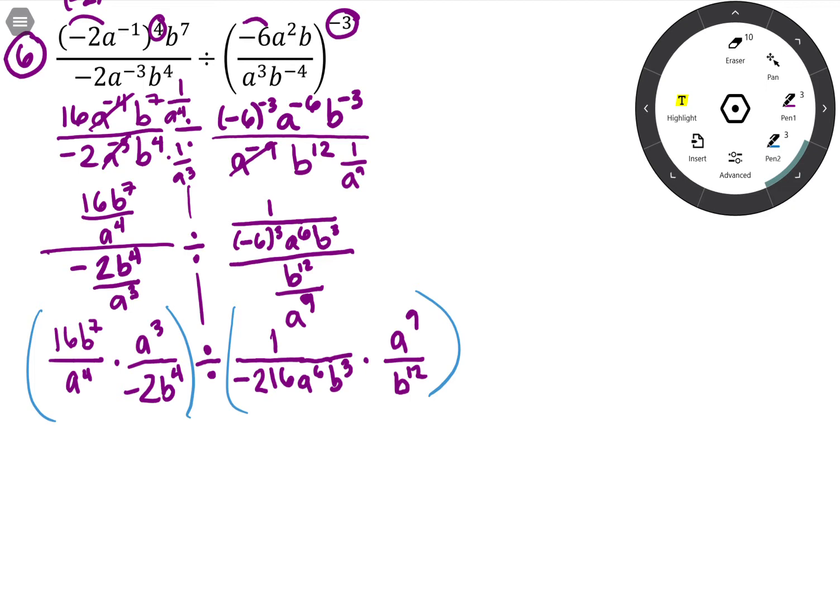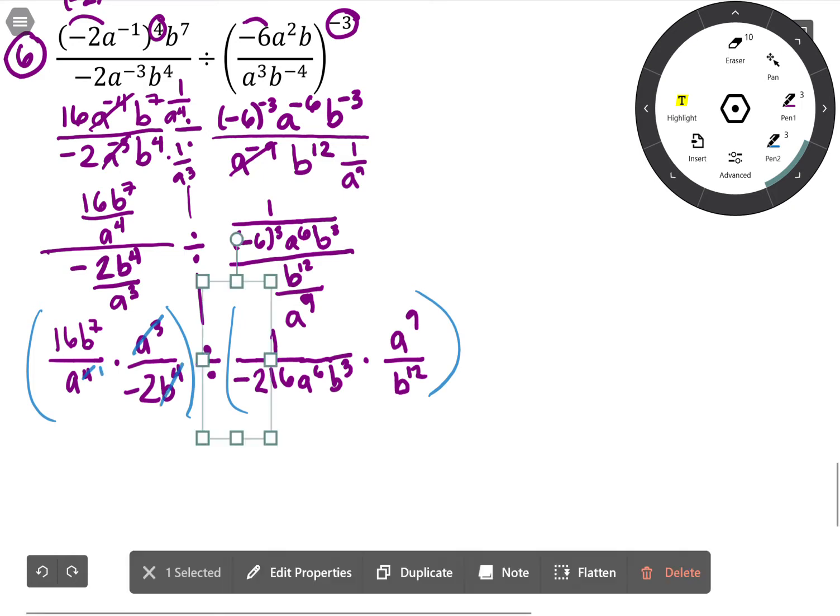Fraction bars are grouping symbols, so everything in there is grouped together. I see a cubed in the top, and I can cancel all but one of those a's in the bottom with that. I see b to the 4; if I take four of the b's from the top, I'll only have three left.